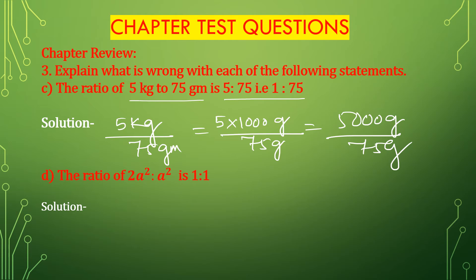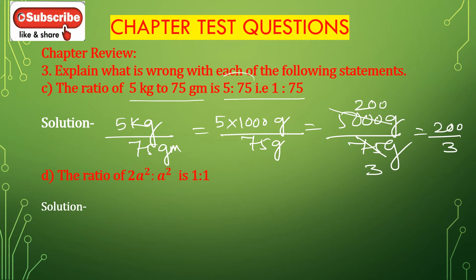That is 5 multiplied by 1000 grams divided by 75 grams. Now between 5000 and 75, 25 is the common factor. So dividing: 5000 divided by 25 is 200, and 75 divided by 25 is 3, which gives 200 divided by 3. But here it is given that 5 is to 75 or 1 is to 75, which is not equal. So this is wrong.